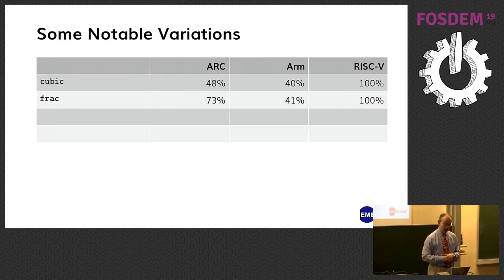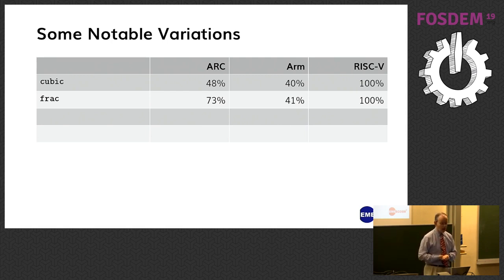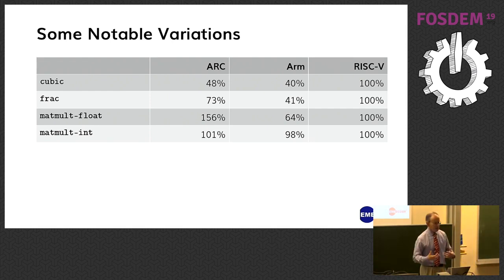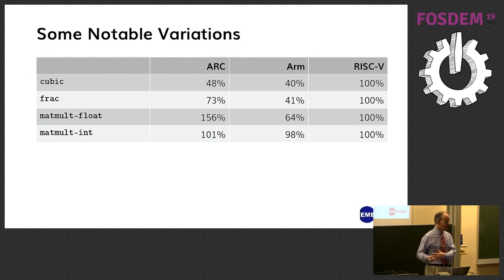There are some notable variations: programs cubic and frac, where ARM and ARC both do well compared to RISC-V — ARM in particular, less so for ARC. And when we look at matmult_float and matmult_int — the same matrix multiplication program done with floating point and integer numbers — ARM does really much better than RISC-V on the floating point one, while the integer one is almost the same.